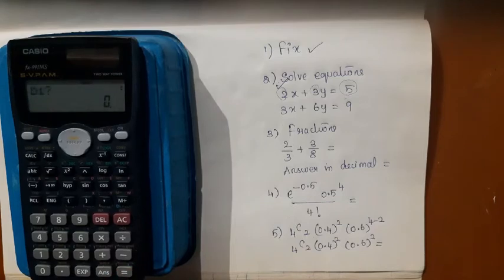a1 is 2, press equal to. Now it is asking for b1. b1 is 3, press equal to. c1 is 5, press equal to. a2 is 3, equal to. b2 is 6, equal to. c2 is 9, equal to.